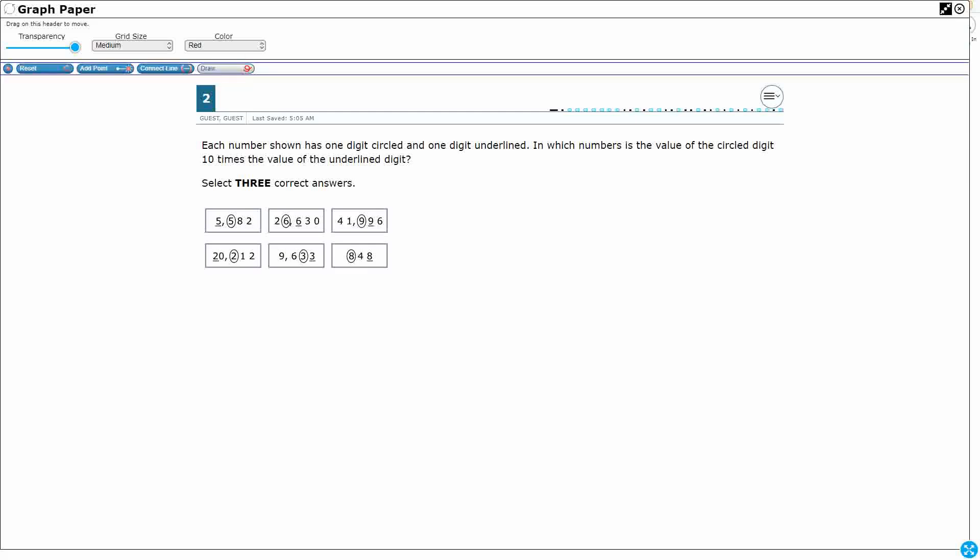So let's take a look at what we're supposed to do here. Each number shown has one digit circled, so we're going to have to pay attention to what's circled, one digit underlined. And which numbers is the value of the circled digit 10 times the value of the underlined digit? So my circled digit needs to equal 10 times my underlined digit.